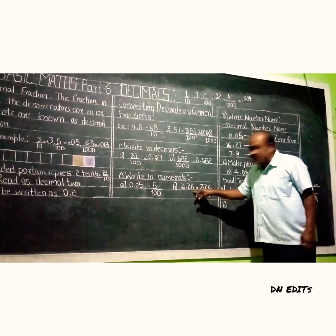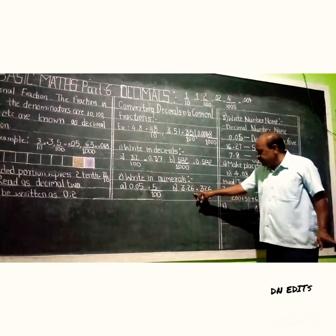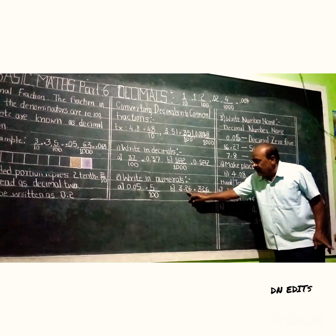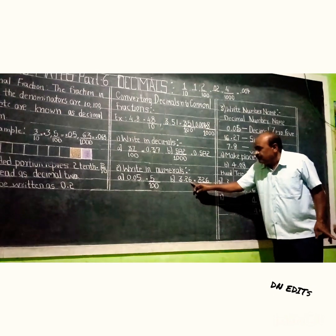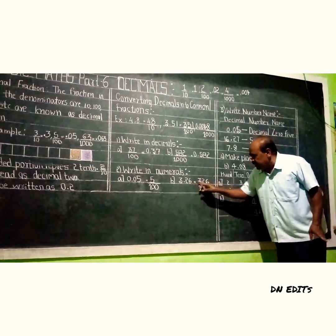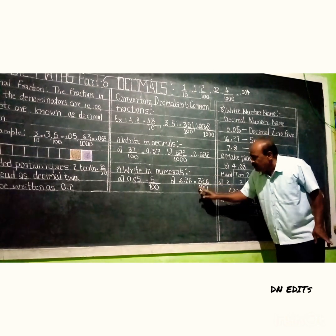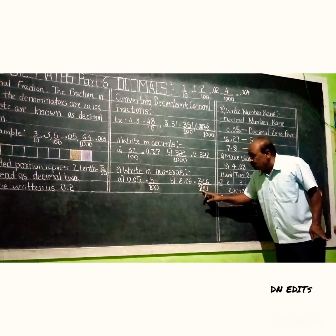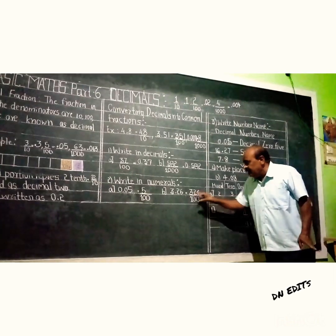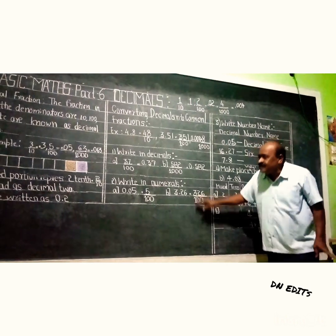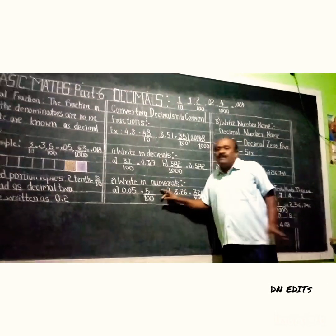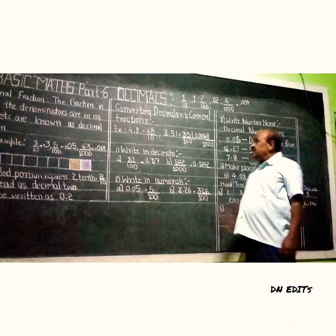Next, 3.26 — after the decimal, how many numbers are there? Two. So you write 3 and 26 in the numerator, and in the denominator write 1 followed by two zeros: 326 by 100. This is writing decimals into common fractions.